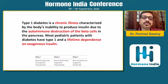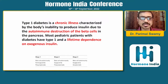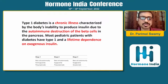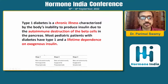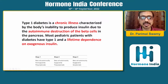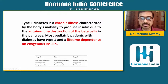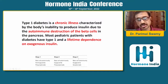We all know from the previous lectures that type 1 diabetes is a chronic illness characterized by autoimmune destruction of the beta cells and a lifetime dependence on exogenous insulin. Type 1 diabetes is now divided into three stages: stage 1, stage 2, and stage 3. All three stages are characterized by beta cell autoimmunity.